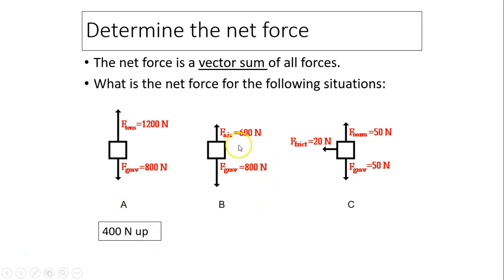This one you'll have positive 600 plus negative 800. You will have negative 200. Negative means downward. Up and down cancel in example C, so all you have left is 20 Newtons to the left. That's the net force.